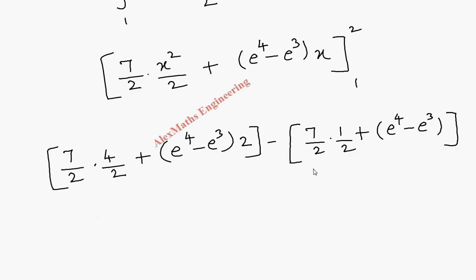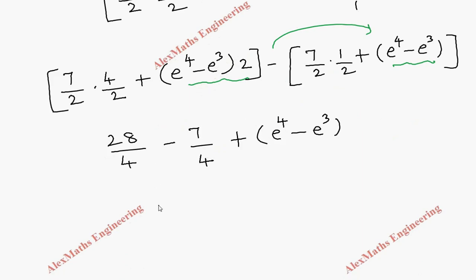Now let's combine first and third term. So this will become 7, 4, 28 by 4 minus 7 by 4. Then here it is 2 times of this. This is minus 1 time because we have to subtract. So minus will be here. So totally it will become 1 time of this term. That is e power 4 minus e power 3. Then subtracting this one we get 21 by 4 plus e power 4 minus e power 3.